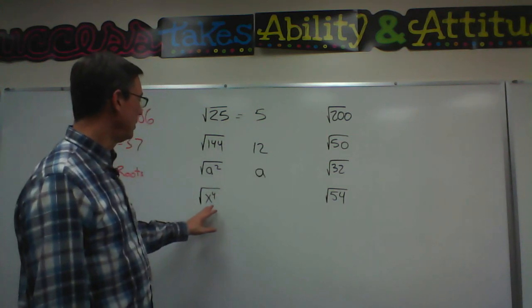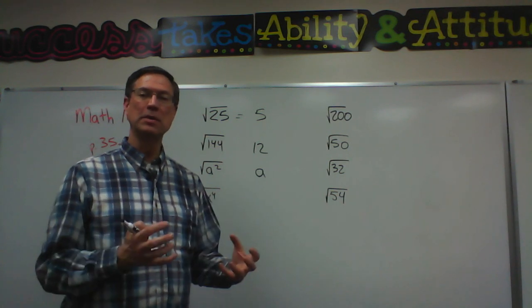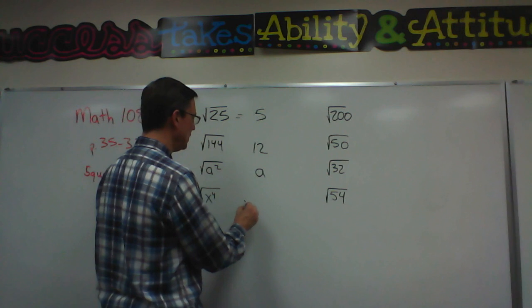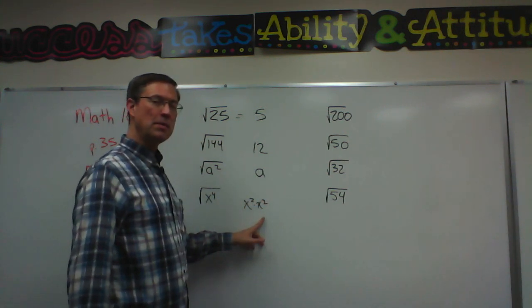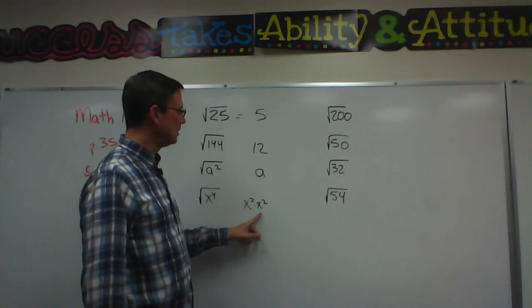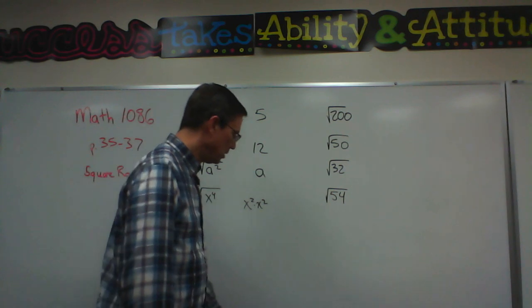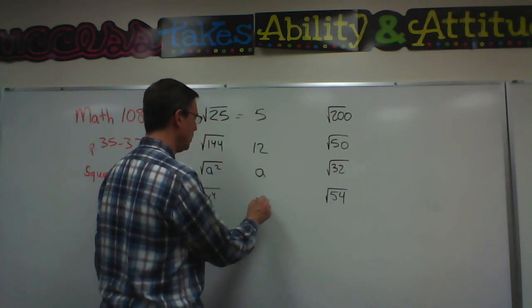And then x to the fourth. Well what times itself would equal x to the fourth? I'm going to write this one out so you see it. It would be x squared times x squared, because remember when you multiply and the base is the same we add the exponents. So x squared would be the answer.